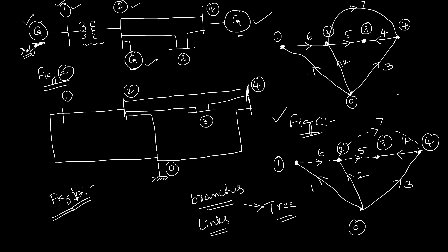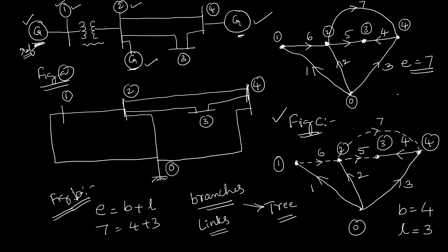Now we can relate elements with branches and links. How many elements are there in the graph? Seven. How many branches are there in this particular tree? Four — 1, 2, 3, 4. How many links are there? Three — 5, 6, 7. So 7 equals 4 plus 3. In this way, we can relate elements, branches, and links.